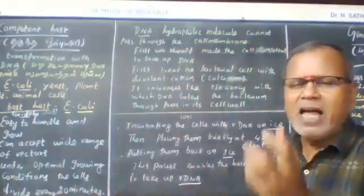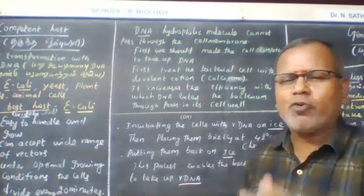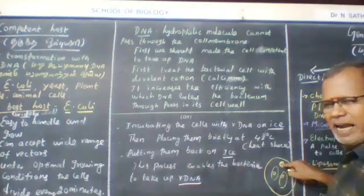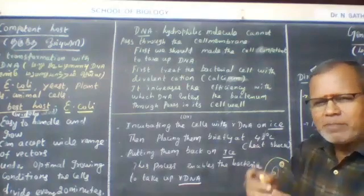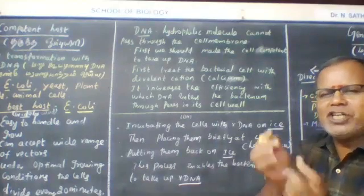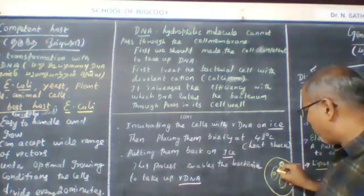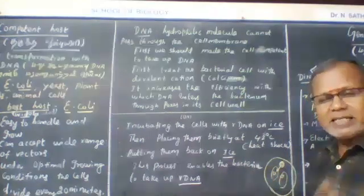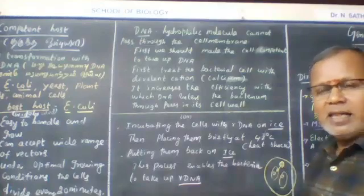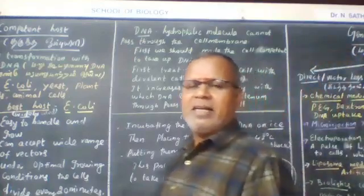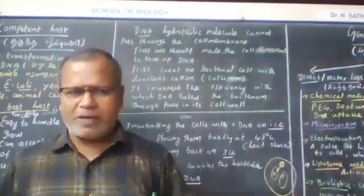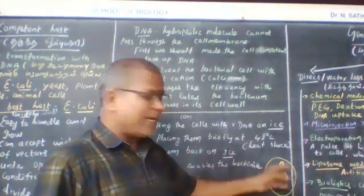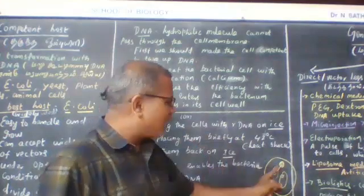The DNA is easier to take up after this treatment. Bacterial cells with rDNA contain the insulin gene. If the DNA is from the donor, the insulin gene is carried on the plasmid.